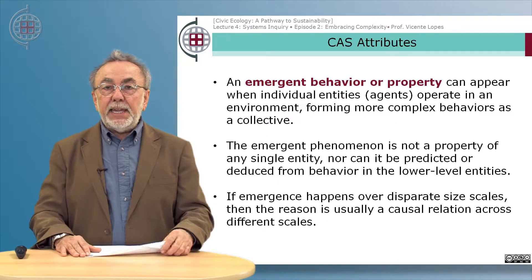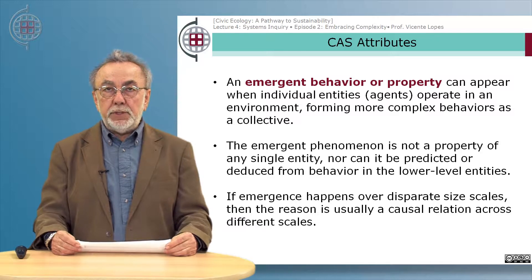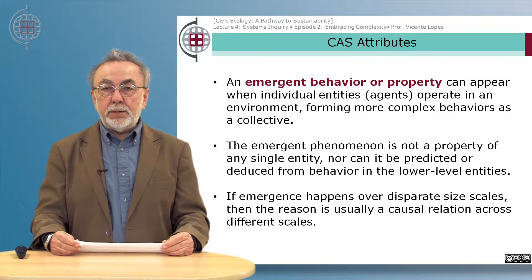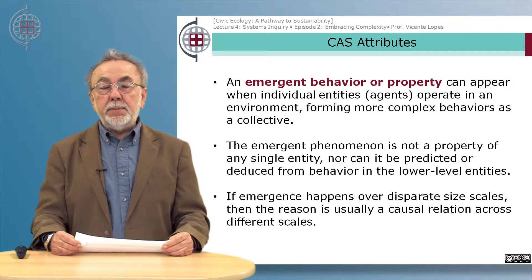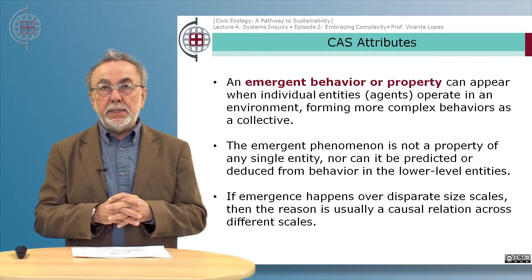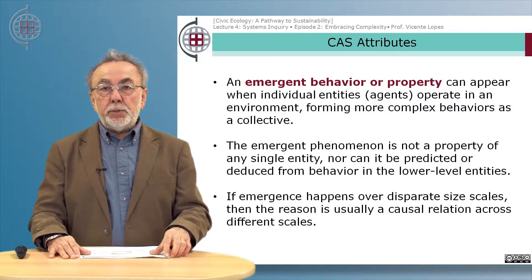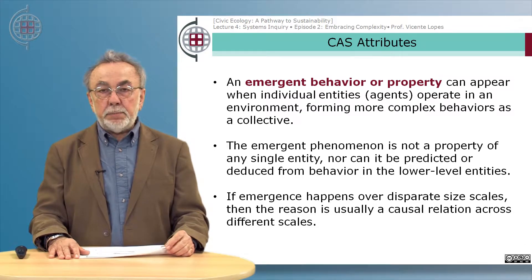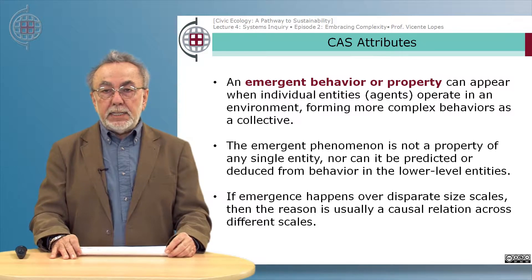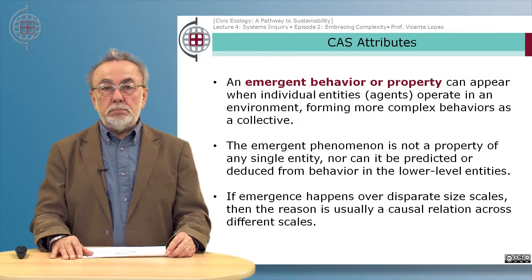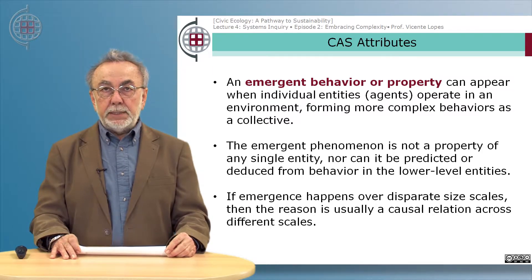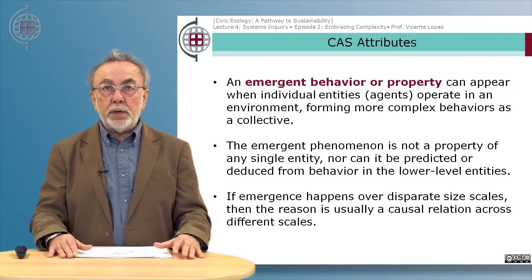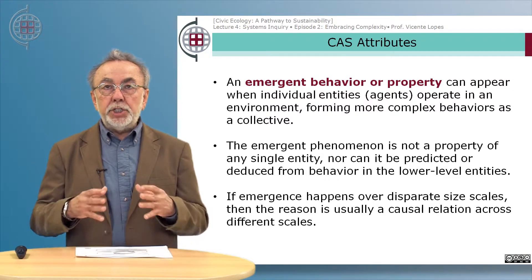An emergent behavior or property can appear when individual entities — called agents in complex adaptive systems language — operate in an environment forming more complex behavior as a collective. The emergent phenomenon is not a property of any single entity, cannot be found as a property of any single entity, nor can it be predicted or deduced from the behavior of the lower level entities. One example is the molecule of water, which has emergent properties.